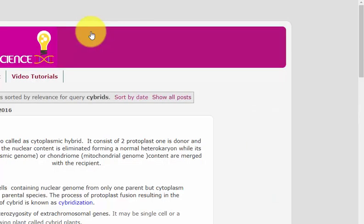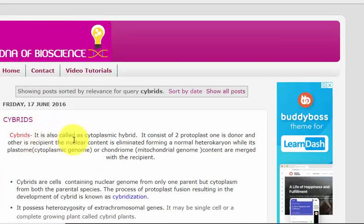I am just opening it. So cybrids, which is the cytoplasmic hybrid, contains two protoplasts. One is donor and one is recipient. One nucleus contains an eliminated form in the normal heterokaryon. While its plastome and the cytoplasmic content and the chondriome, that is the mitochondrial content, they get merged with the recipient.